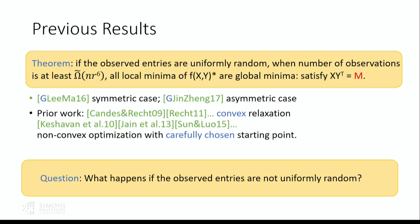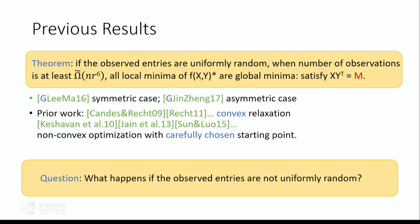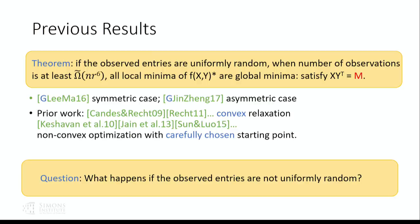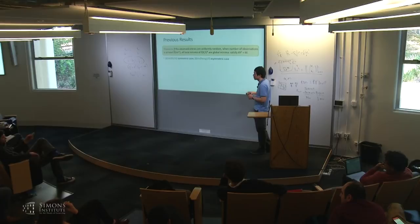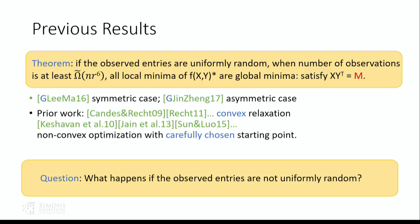The main thing I want to discuss is: what happens if the observed entries do not satisfy the assumption that they are chosen uniformly at random? Because if you think about it, this assumption is not really reasonable — it says for every user i and every item j, the probability that user i rates item j is exactly the same. That's unlikely because if user i rated item j, the same user is more likely to read some related items. So there are certainly possibly some correlations between how observed entries are chosen.